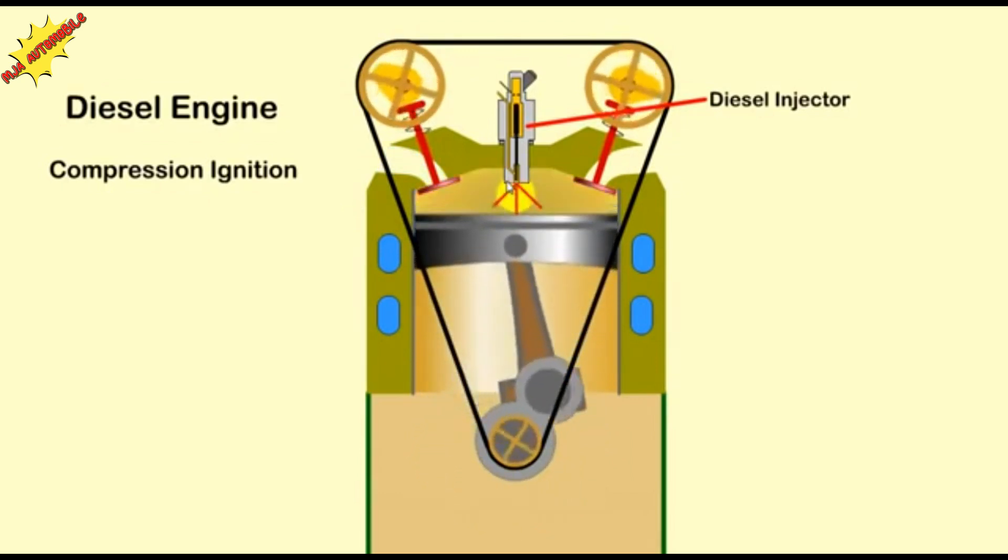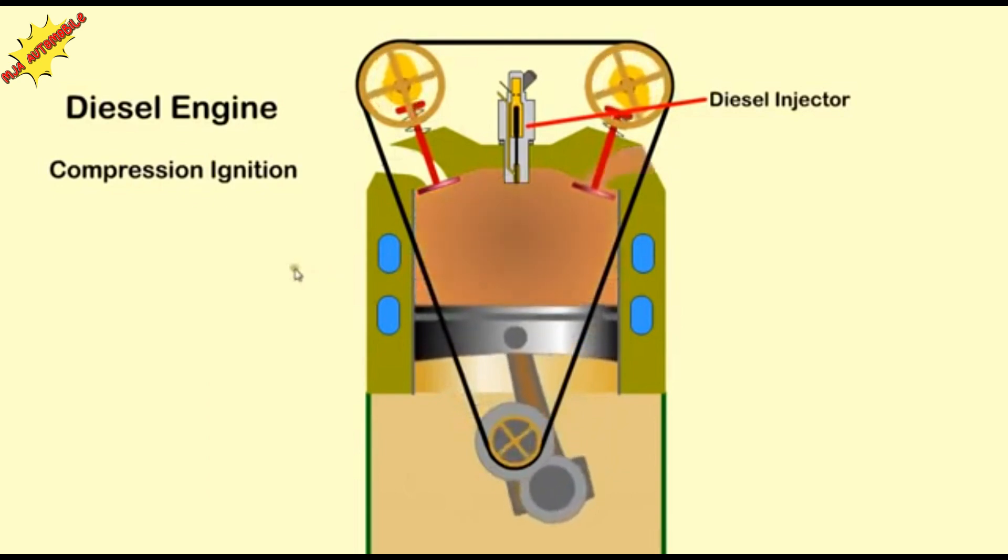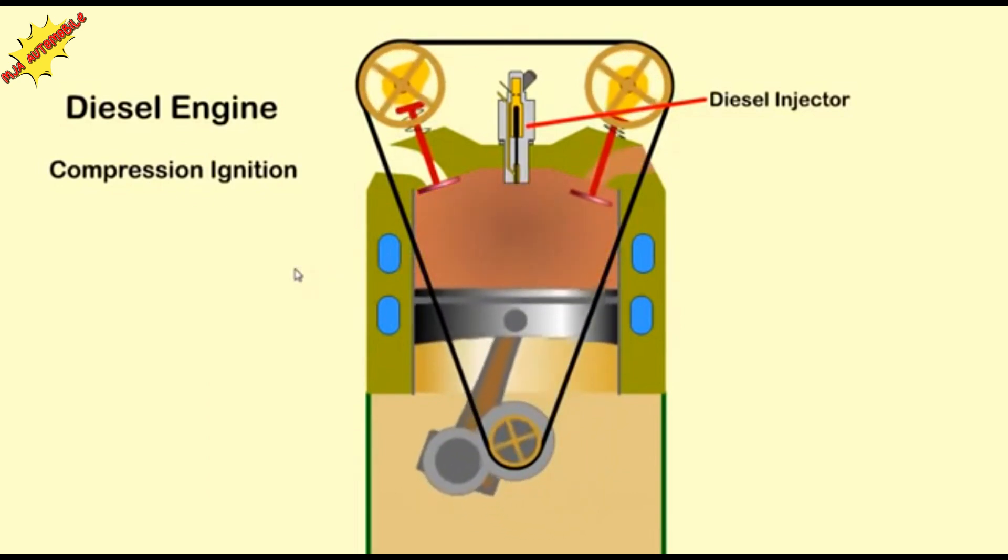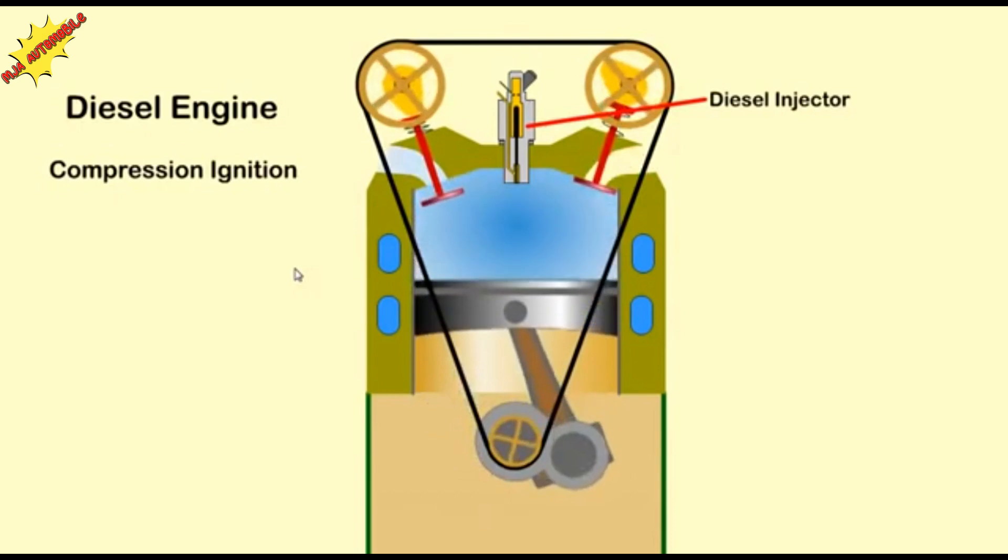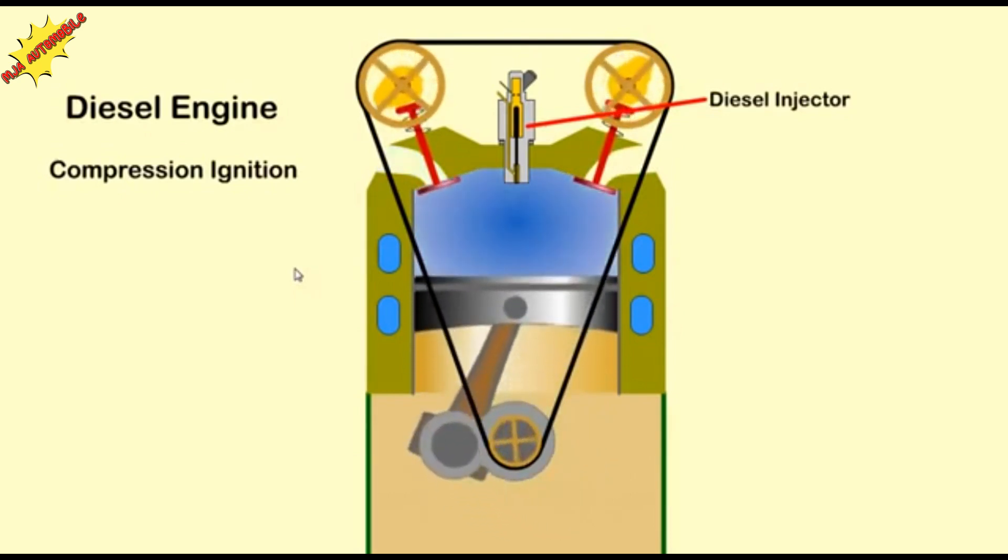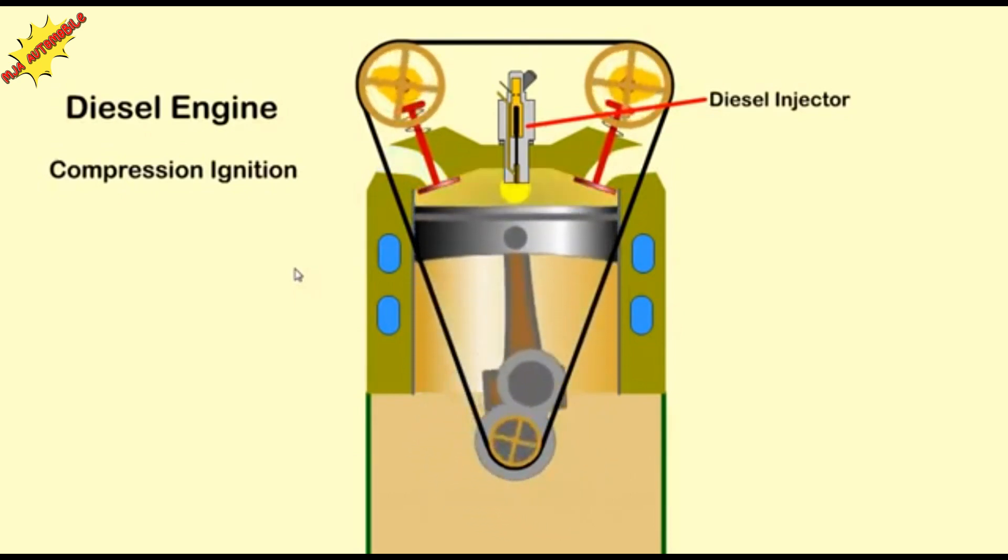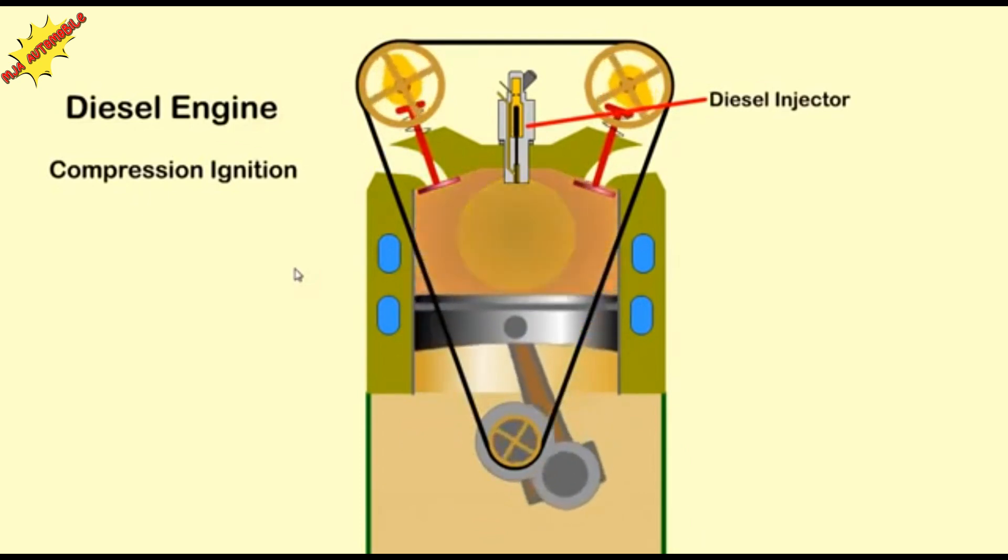When the piston is near TDC, diesel is injected directly into the cylinder and ignites in the hot air. Diesel engines operate at a higher compression ratio, are heavier in construction, provide good torque, and are particularly suited to turbocharging.